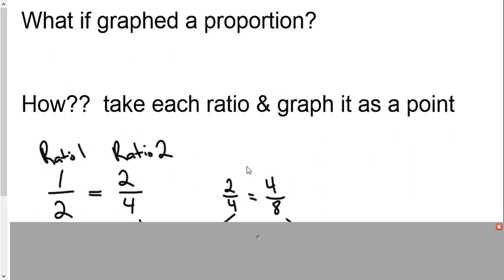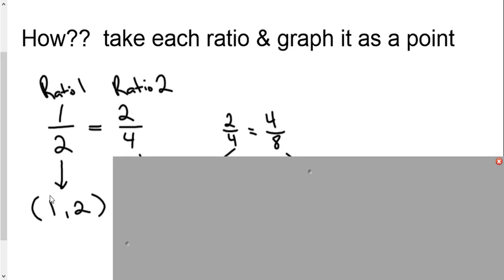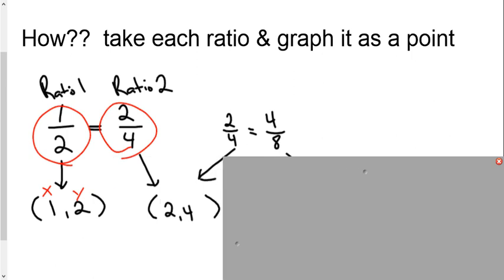So let's take a look at this. What if we graphed a proportion? How can we do that? Well, if we looked at 1 half equals 2 fourths, let's just take the top number and call that the x value. So here's going to be the x, and here's going to be the y. We could graph this ratio right here as 1 to 2, or point (1, 2) on a Cartesian plane. This 2, 4 would then become x is 2 and y is 4.